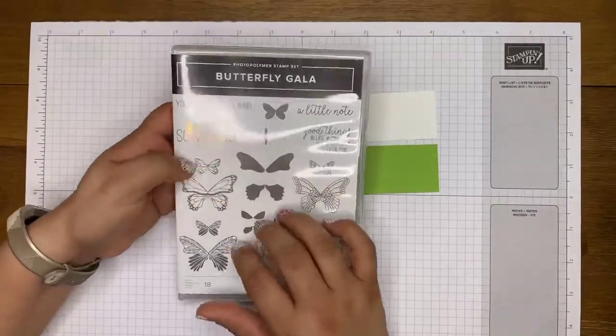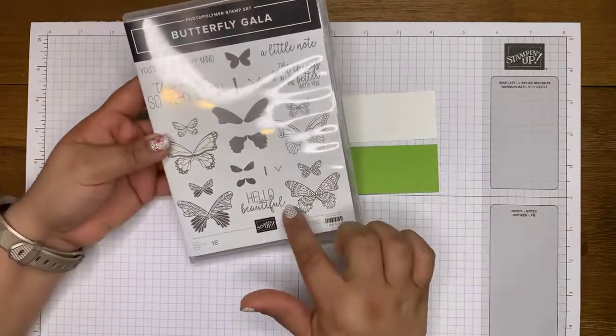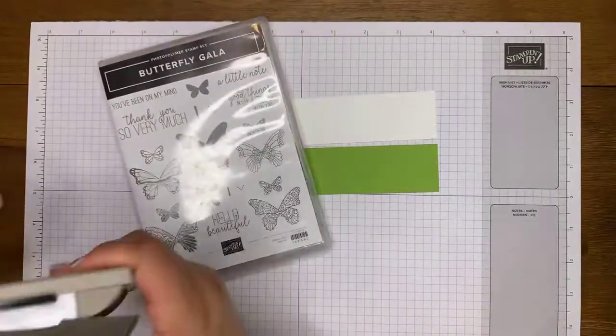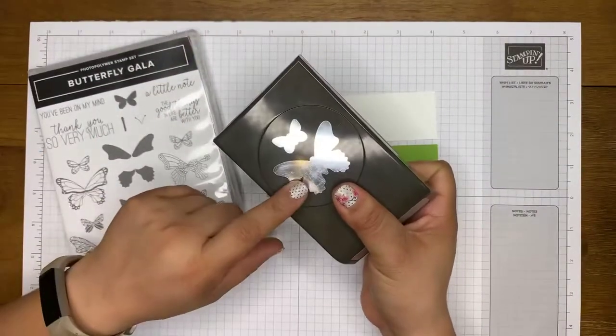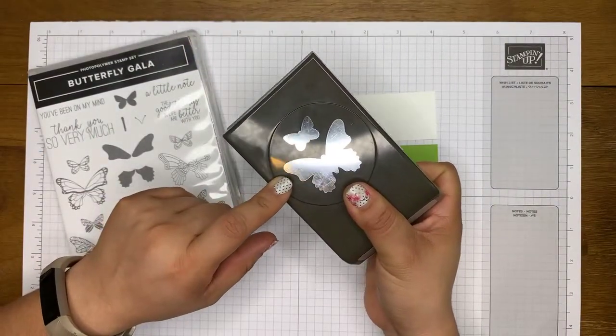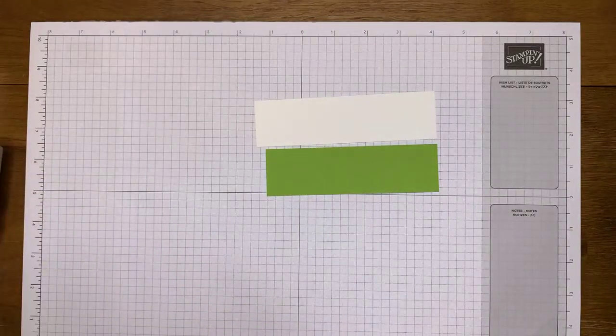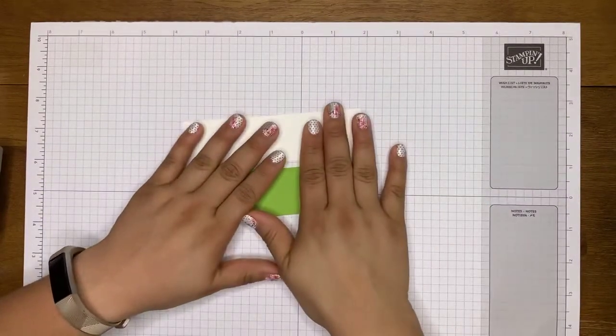I'm going to be using the Butterfly Gala stamp set. We're going to be using this butterfly guy here and the thank you so very much sentiment. I'm also using the coordinating duet butterfly punch. And yeah, I think that's it. Okay, let's go ahead and get started.